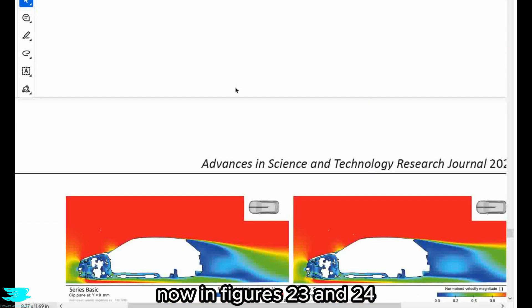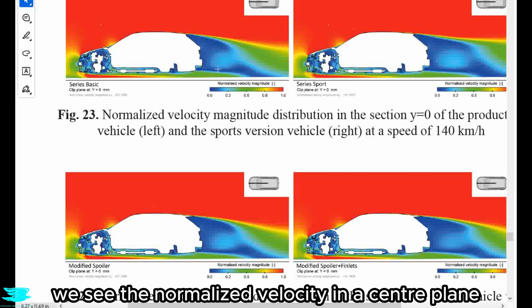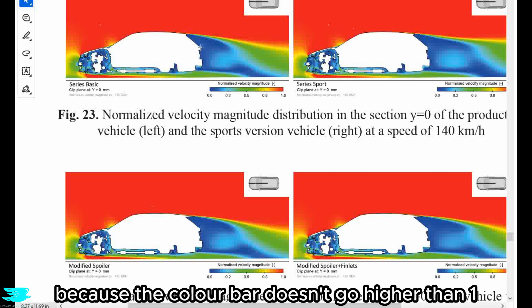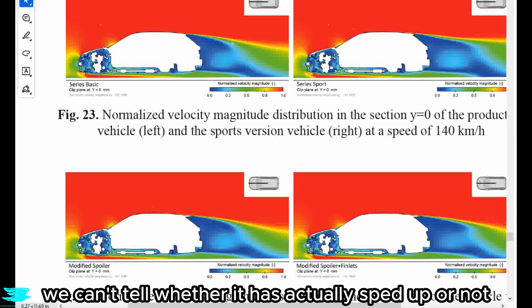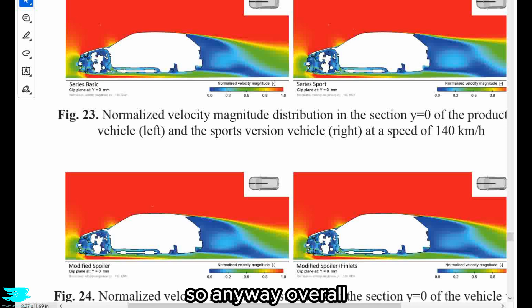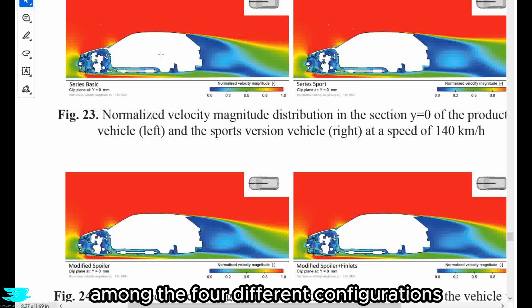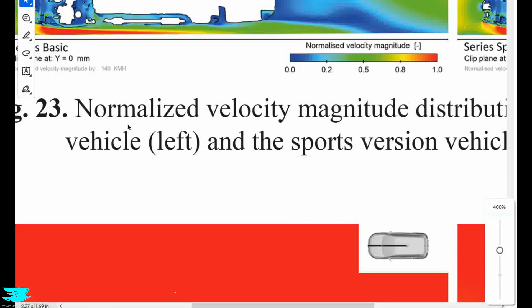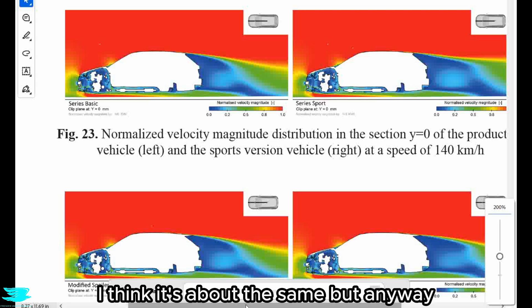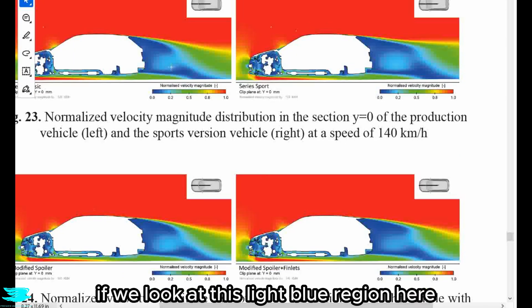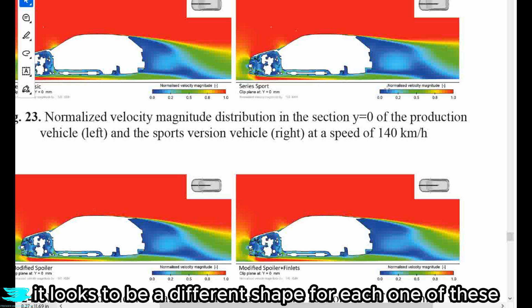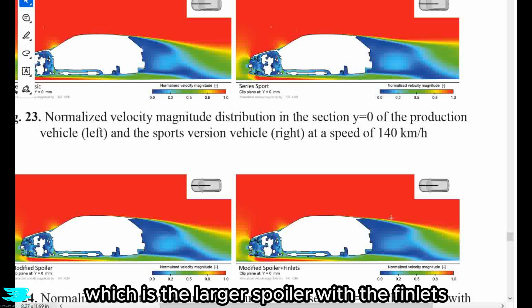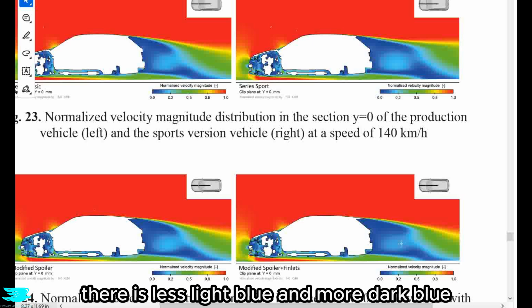Now in figures 23 and 24, we see the normalized velocity in the center plane, and that is normalized to the free stream flow. So red means it's the same speed or higher because the color bar doesn't go higher than one. So we can't tell whether it has actually sped up or not. So anyway, overall, the flow looks very similar among the four different configurations. Perhaps there's a bit of a change in the wake among them where if you look at the light blue region, it looks to be a different shape for each one of these configurations. Interestingly, for the bottom right, which is the largest spoiler with the finlets, there is less light blue and more dark blue, which suggests a stronger wake.